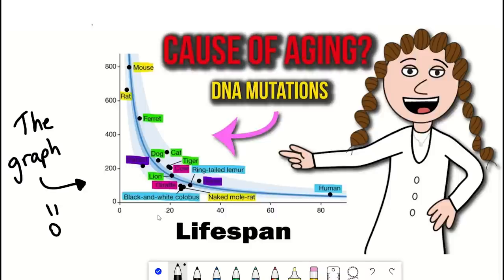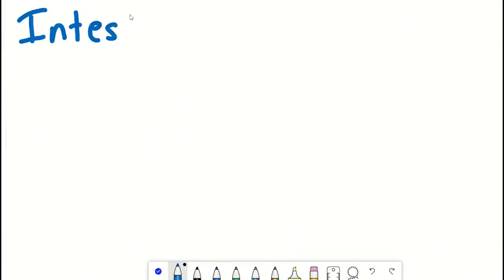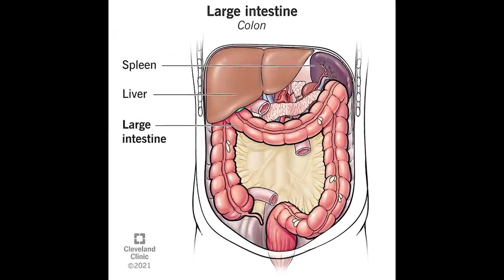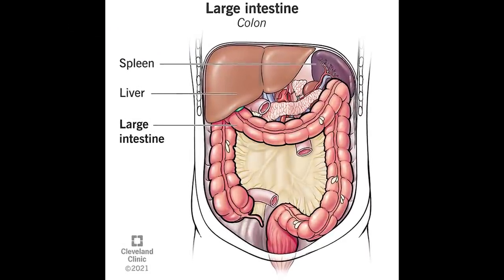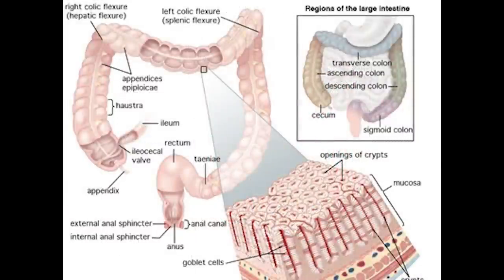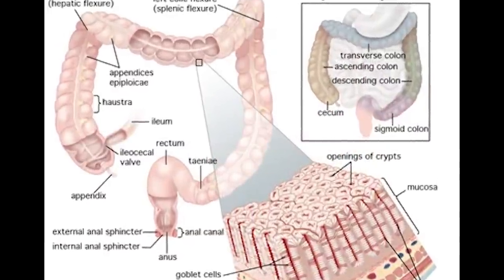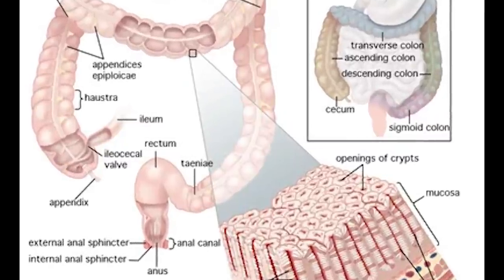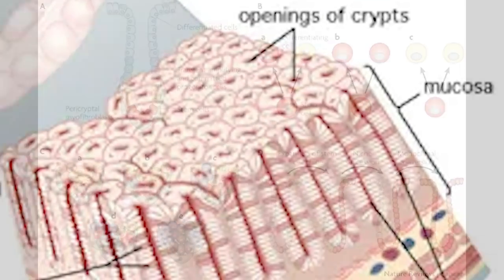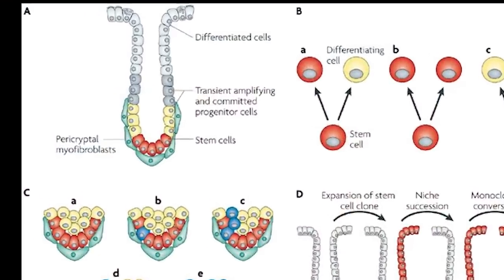Our story today begins with the intestine — in particular, the large intestine. The large intestine is involved in absorbing water and absorbing some of the vitamins from foods, and it's also where most of the gut microbiome is residing. The functional unit of the intestine is the crypt, and at least in humans, we have around 15 million of them.